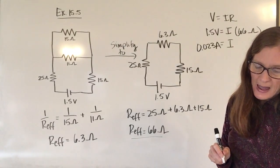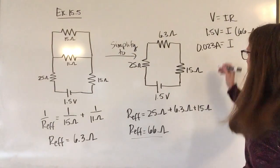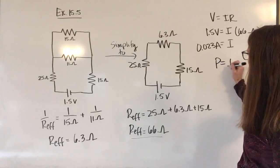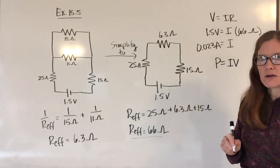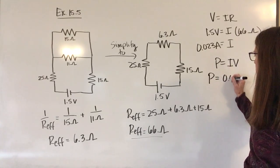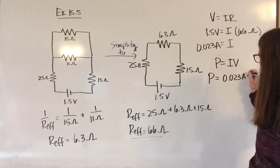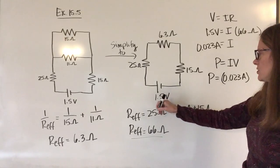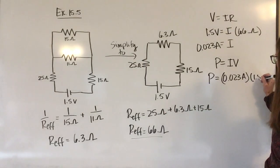Okay, now once I have that, then I can use my power equation, P equals I times V and I can calculate the amount of power. So power equals 0.023 amps times 1.5 volts.